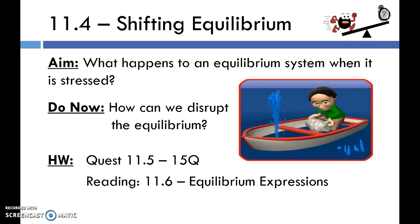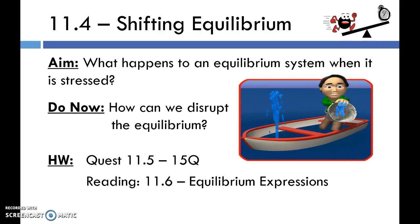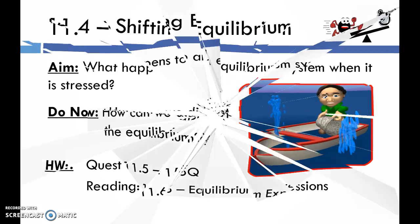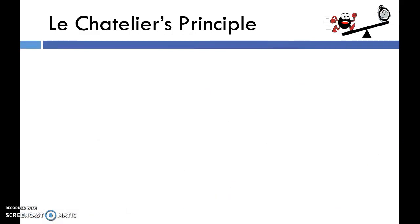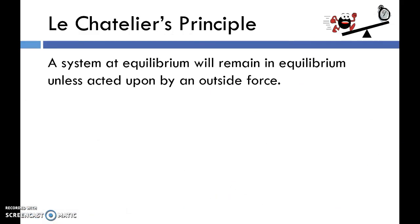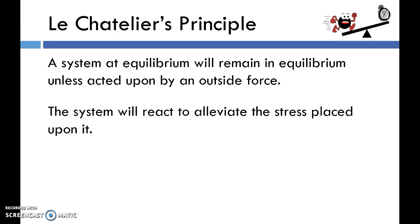That's not quite what a chemical equilibrium system looks like, but you're getting the idea. Le Chatelier's principle states that a system at equilibrium will remain in equilibrium unless acted upon by an outside force. Once a closed system has established equilibrium, the forward and reverse reactions will continue occurring at the same rate until you stress it out. When you do stress it — whether by changing concentration, temperature, or pressure — the system reacts to alleviate that stress.